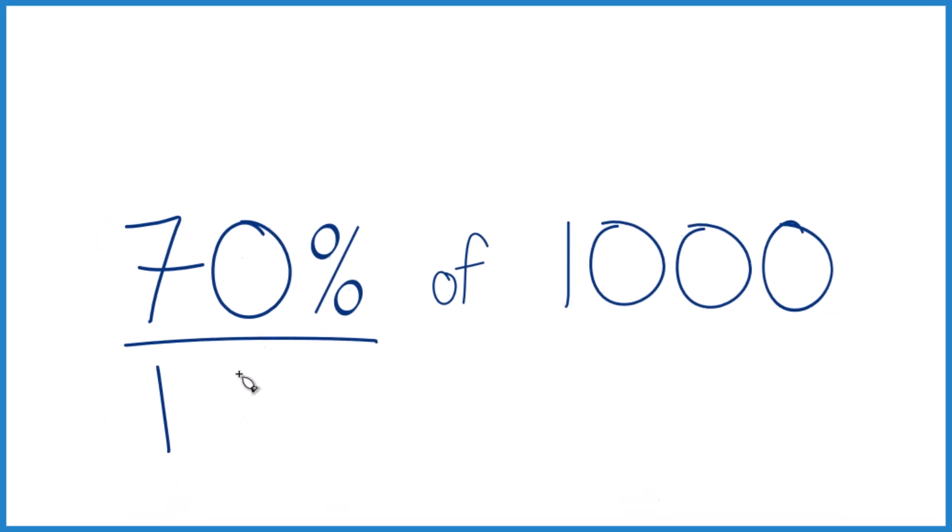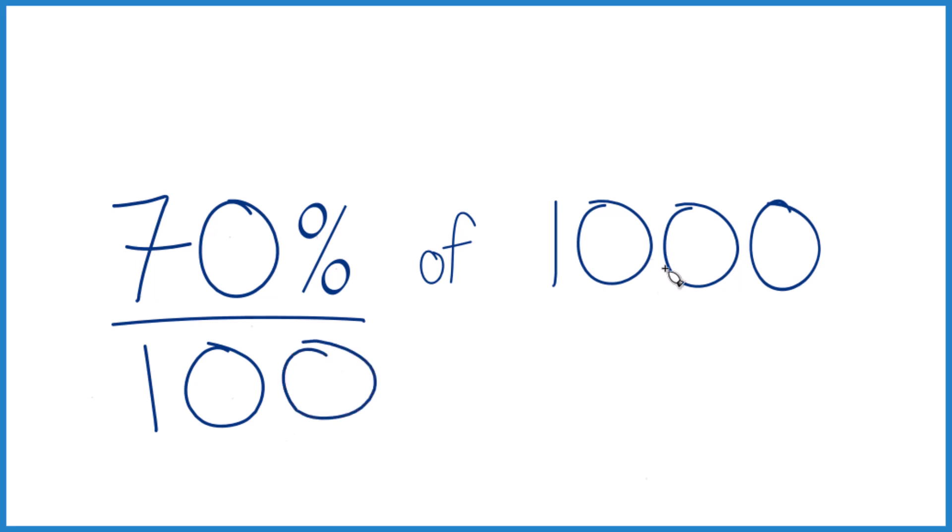70%, that means 70 per 100. So if I only had 100 here, that would be 70. But since I have 1,000, let's put another zero. Let's not call it 70, let's call it 700.